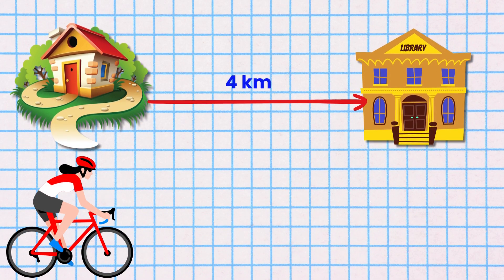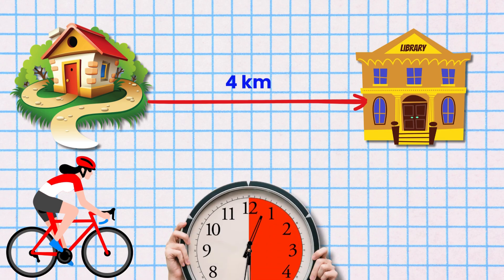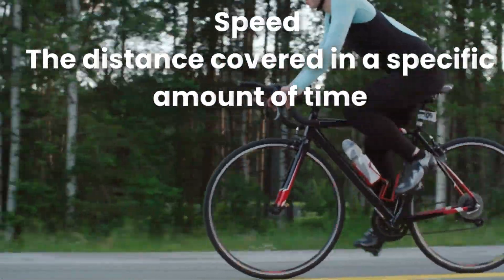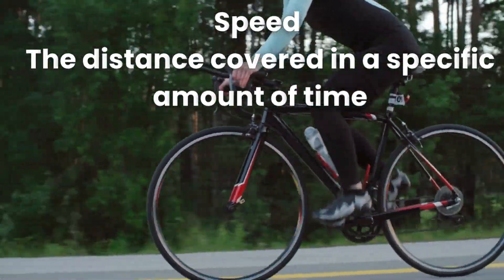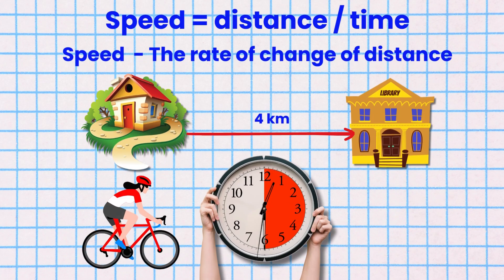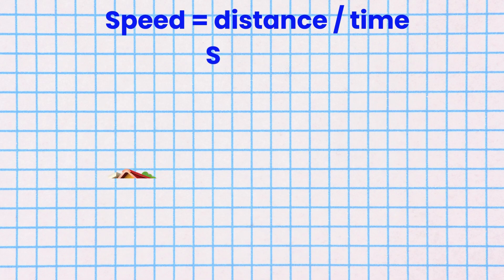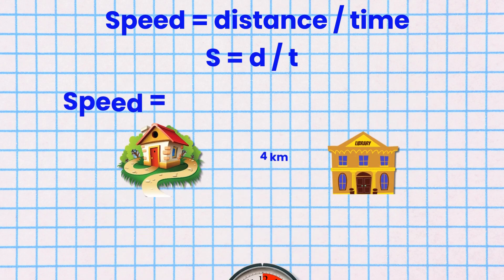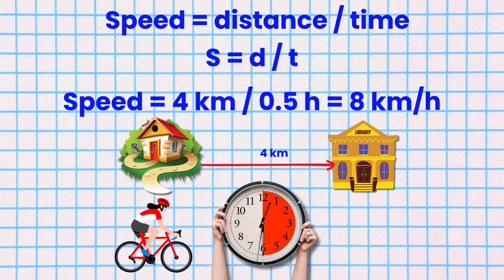Speed. Mole is biking to the library which is four kilometers away from her home and she arrives in half an hour. So what is her speed? Speed is defined as a distance covered in a specific amount of time, or simply the rate of change in distance. So we can write this as speed equals distance d divided by time t. So Mole's speed is 4 kilometers divided by 0.5 hours, which is equal to 8 kilometers per hour.